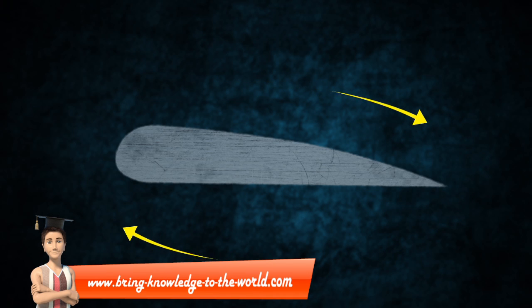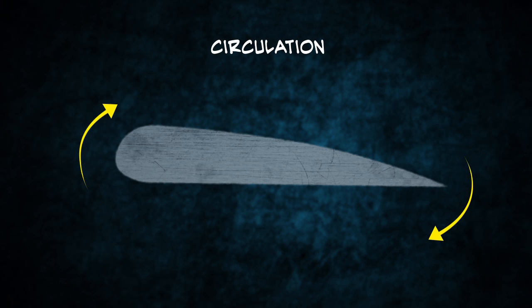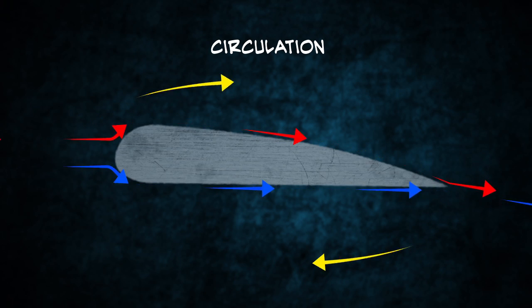A theory says that a vortex in the form of a circulating airflow will build up around the airfoil of the airplane. This circulation increases the velocity of the airflow on top of the wing and decreases its speed below it.